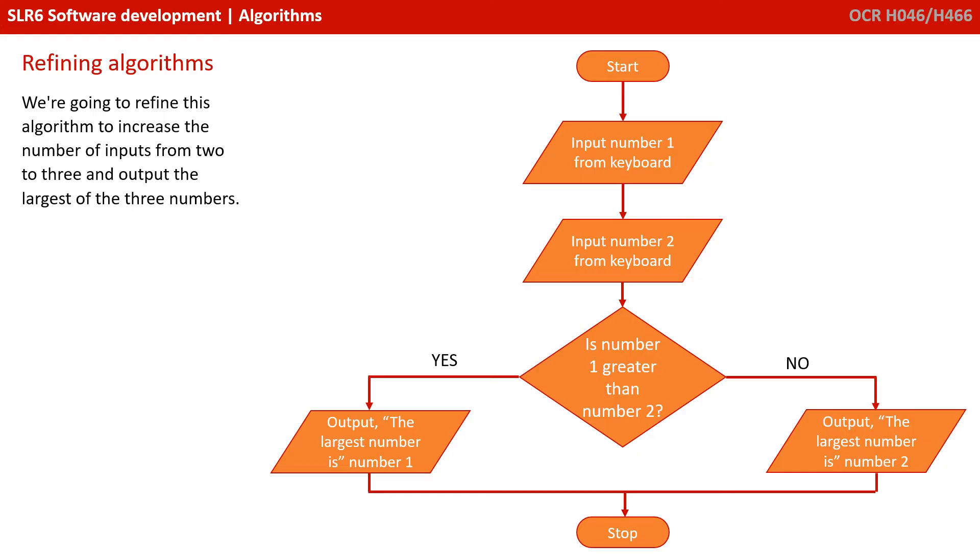And we're being asked to refine it, so it will now output the largest of three numbers entered by the user.